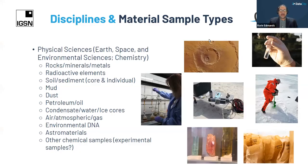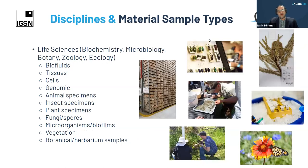This is not comprehensive, and there will be crossover among disciplines, but here are some examples of disciplines and material sample types. In the physical sciences — earth, space, environmental sciences, and chemistry — you can see the sorts of material samples that might be collected. Likewise, in the life sciences — biochemistry, microbiology, botany, zoology, ecology — here's a list of things they might collect as material samples, remembering that this will include live specimens, which is quite an important class.